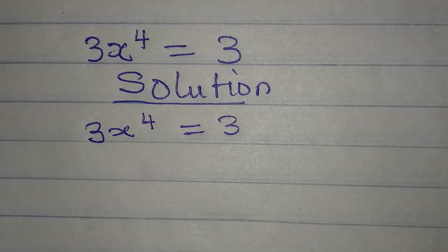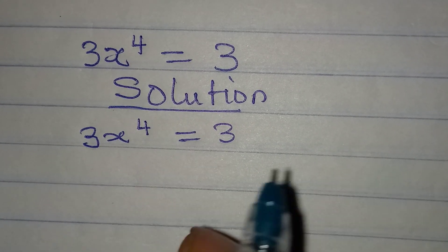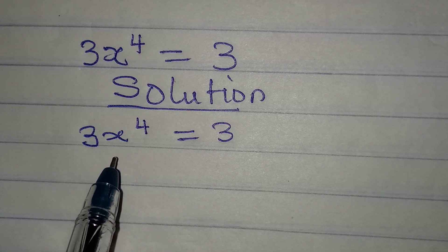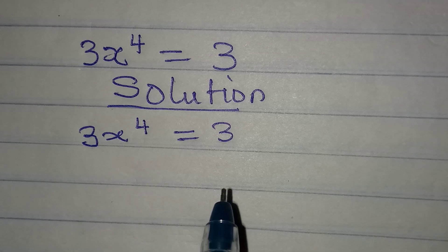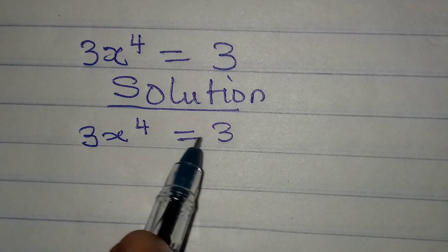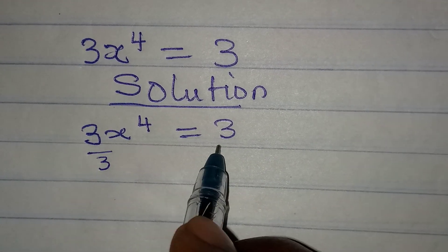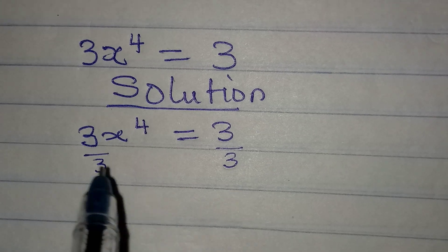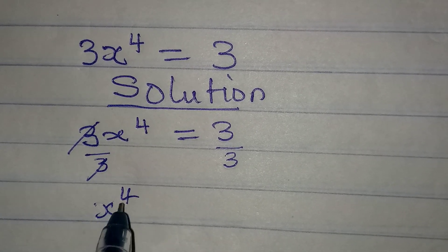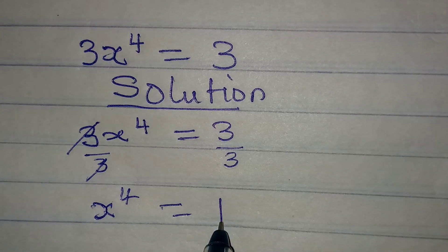Hello everyone. Let us provide the solution to this problem — we are going to solve this fully, meaning we should bring out all the possible solutions. We have 3x to the power of 4 equals 3. I can divide both sides by 3, so 3 will cancel and x to the power of 4 is going to be equal to 1.